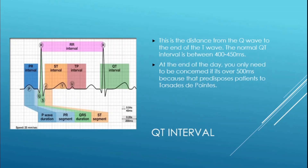For the QT interval — the distance from the Q wave to the end of the T wave — the normal is about 400 to 450 milliseconds. When you start getting longer QT intervals around 450–460, that can be seen in STEMIs because they become wider, fatter T waves. But the key number to remember is 500 milliseconds on your QTc (corrected QT interval), because that predisposes patients to TdP or Torsades de Pointes. Watch your medications — Zofran and amiodarone can prolong your QT interval.